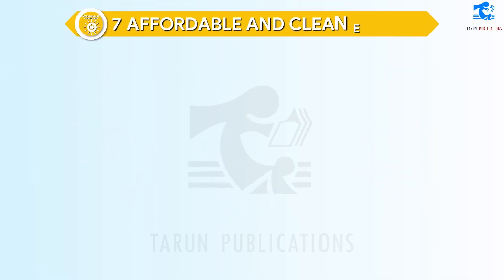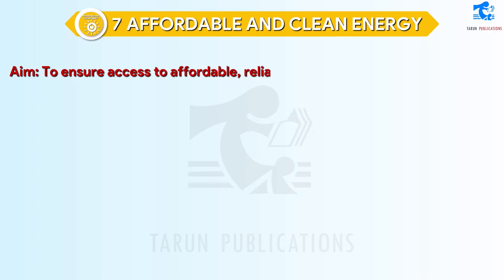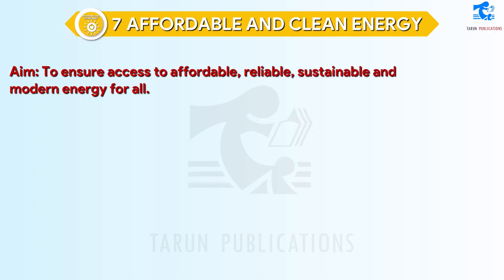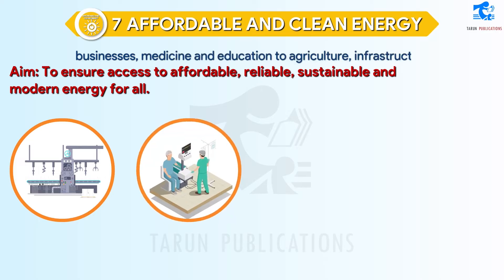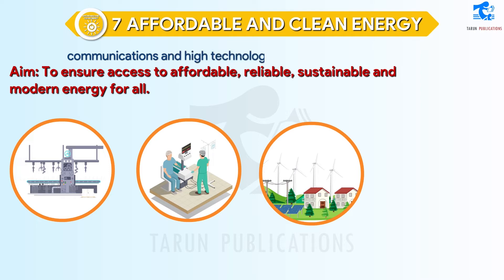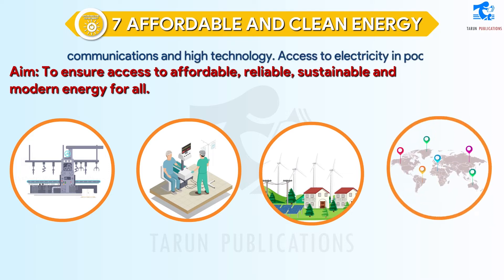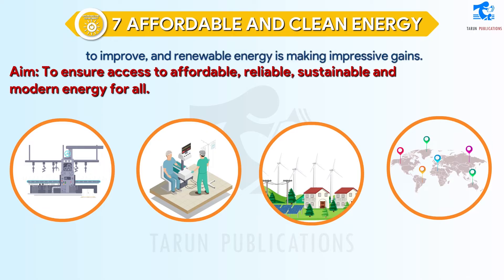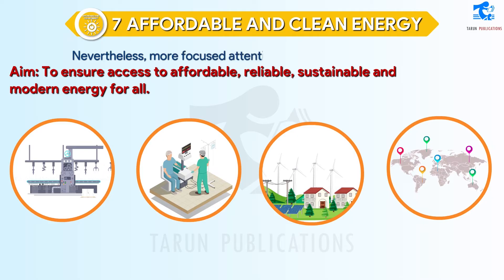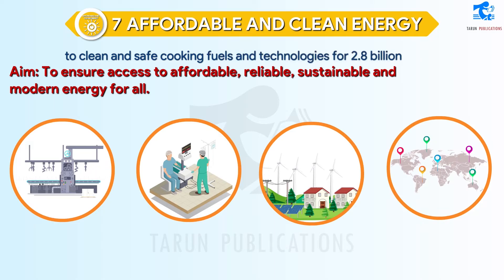SDG 7: Affordable and Clean Energy. Aim: to ensure access to affordable, reliable, sustainable, and modern energy for all. A well-established energy system supports all sectors, from businesses, medicine and education to agriculture, infrastructure, communications, and high technology. Access to electricity in poorer countries has begun to accelerate, energy efficiency continues to improve, and renewable energy is making impressive gains. Nevertheless, more focused attention is needed to improve access to clean and safe cooking fuels and technologies for 2.8 billion people.